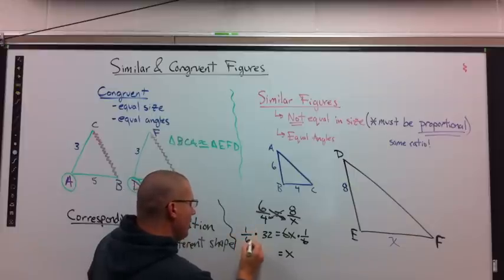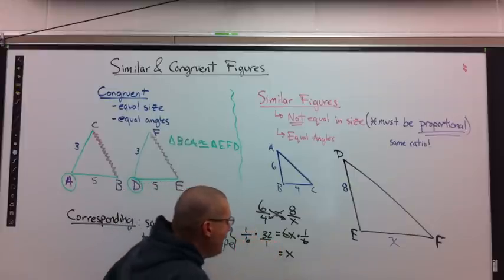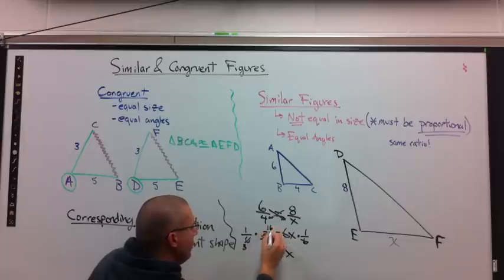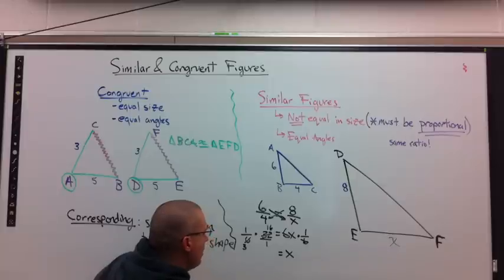On this side, 1 over 6. 32 over 1, I can reduce. Reduce both by 2. 3 and 16. I don't need a decimal. I can make a mixed number. 3 goes into 16, 5 times. I'm left with 1 third.